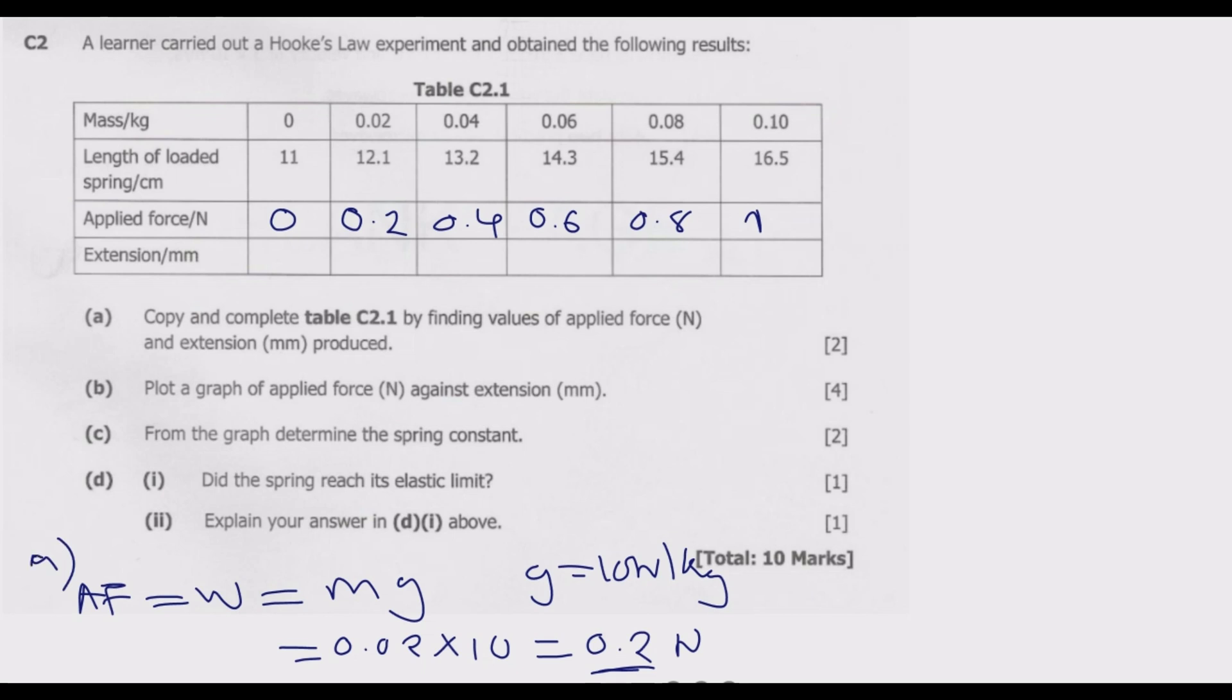Extension in millimeter will be extension after we load a particular weight or mass, minus extension before we loaded anything, which is L0. This is LI at a particular load, minus L1 before we load anything. The first one is 11 minus 11 equals 0. The next one will be 12.1 minus 11, we end up with 1.1 centimeter, but we need to give the answer in millimeter. In one centimeter we have 10 millimeter, so 1.1 times 10 equals 11 millimeter.